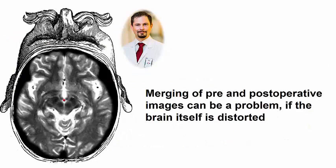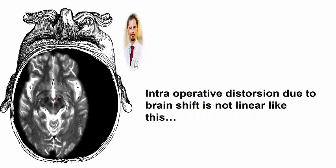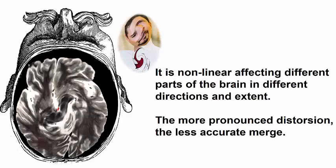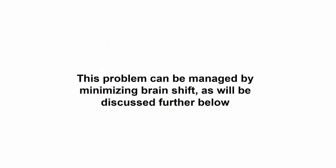Even with a good protocol, merging of pre- and postoperative images can be a problem if the brain itself is distorted. Since intraoperative distortion due to brain shift is not linear, it is nonlinear affecting different parts of the brain in different directions and to different extents. And the more pronounced distortion, the less accurate the merge. This problem can be managed by minimizing brain shift as will be discussed further below.